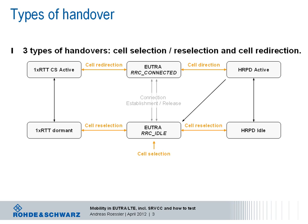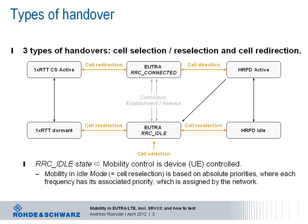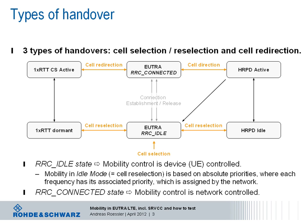Last but not least, there would be a seamless handover or cell redirection to another RAT or another frequency band, for example from LTE to HRPD or 1X RTT. In idle state, the mobility control is up to the device. Mobility here is equipped with cell reselection, which is based on absolute priorities assigned by the network, where each frequency has its own assigned priority. In connected state, the mobility control is, of course, under network control, as it would be chaotic if the device could decide when to hand over without knowing the load situation in neighboring cells.